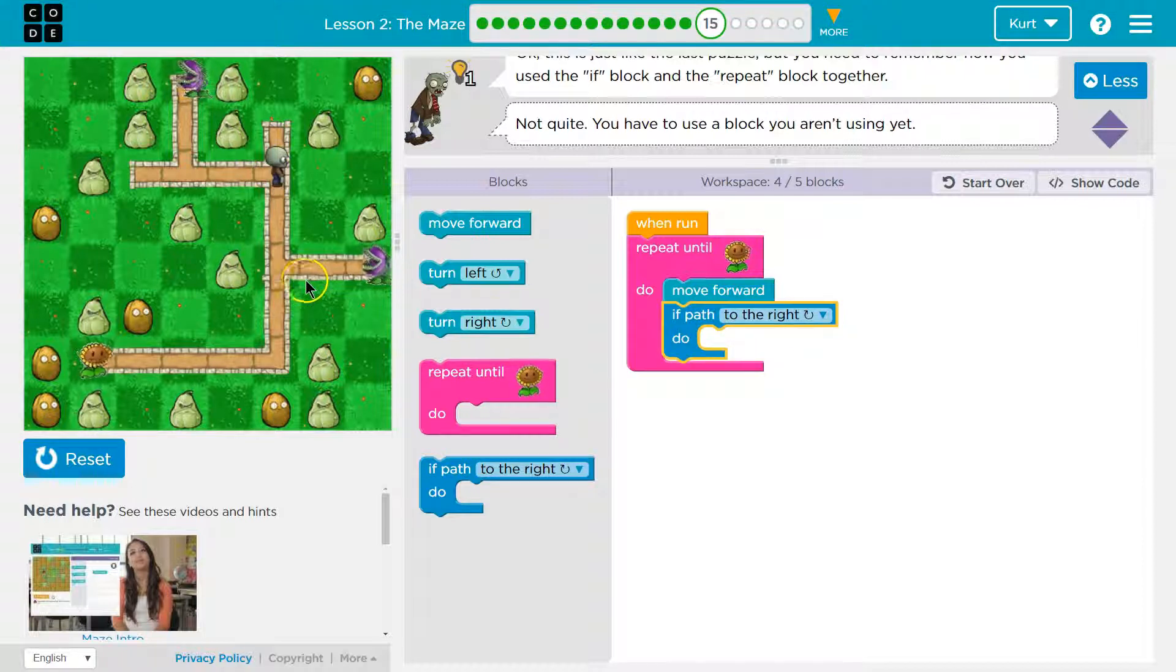Because when I'm walking down here, is this on the left of me or the right? That would be on the left of me, and this guy is on the left of me. What if we do if path to right, oh, turn right?